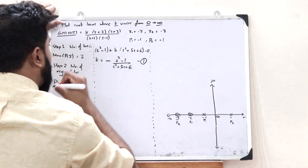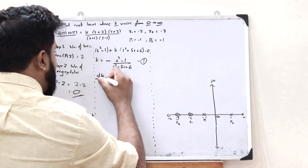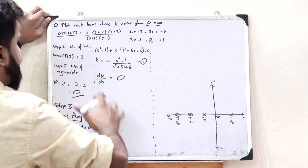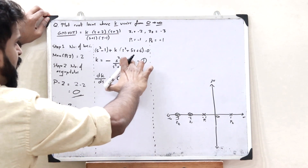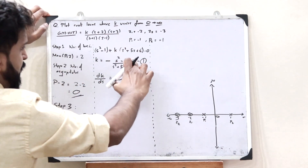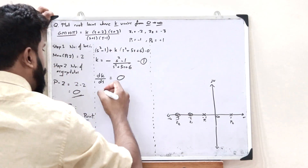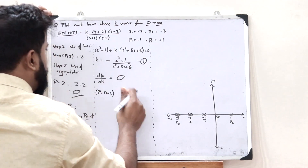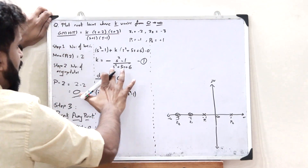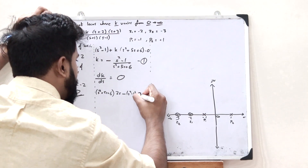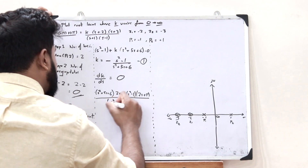To find the breakaway point, we take dk/ds and equate it to 0. Using the quotient rule — denominator times derivative of numerator minus numerator times derivative of denominator, all divided by denominator squared — we get: [(s²+5s+6)·(2s) − (s²−1)·(2s+5)] / (s²+5s+6)² = 0.